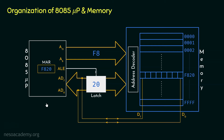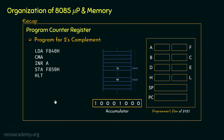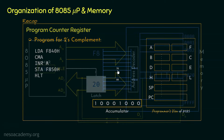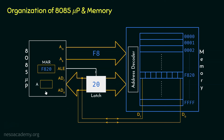Notice the latch will hold the address for now. We also need to learn about another required component for data transfer. In the previous session, when learning about the program counter register and creating a program for two's complement, we were carrying data from a particular memory location into the accumulator register to perform operations on it. Whenever data is to be operated on, the microprocessor needs the accumulator. So we will also need the accumulator register so that data brought from the memory location can be placed within it.